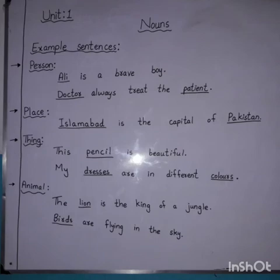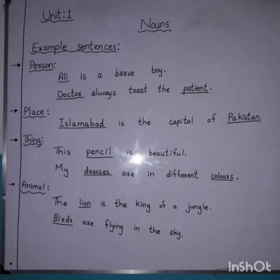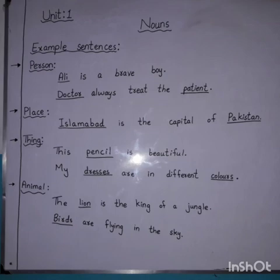Thirdly, we discussed about thing. Number one — This pencil is beautiful. In this sentence, pencil is the name of a thing. Number two — My dresses are in different colors. In this sentence, dresses and colors both are known as things.